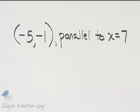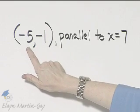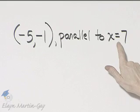We want to write an equation of the line that is through this point and parallel to the graph of this line.